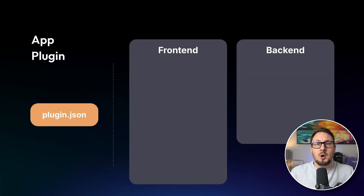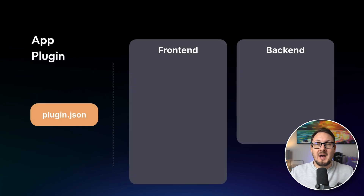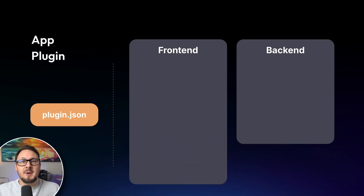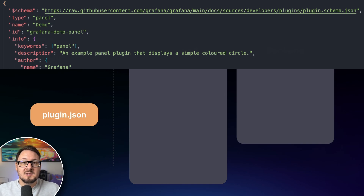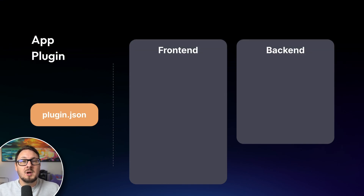Let's take a look at the individual components that make up an app plugin. It's important to point out that every plugin, no matter what its type, has a plugin.json configuration file. This is where you'll create all of your plugin's metadata, such as its name, description, icons, screenshots, and any relevant links. All of these will then become available within the plugin catalogue.